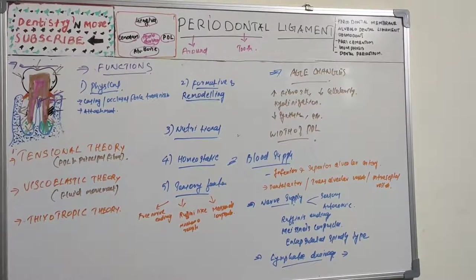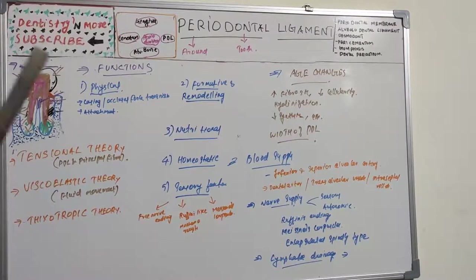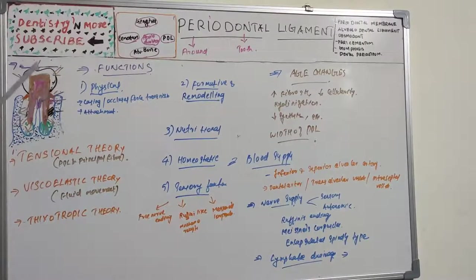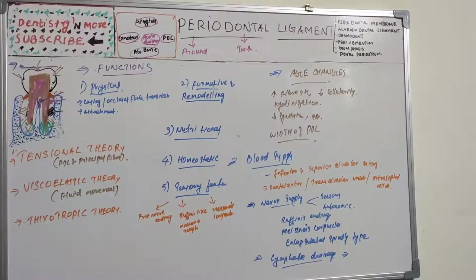The formative and remodeling function involves cells of the PDL participating in formation and resorption of cementum and bone, occurring during physiologic tooth movement, accommodation to occlusal forces, and repair of injuries. The three-dimensional fiber meshwork adapts to positional changes of the tooth. The PDL is constantly undergoing remodeling — all cells and fibers are broken down and replaced, with mitotic activity observed in fibroblasts.